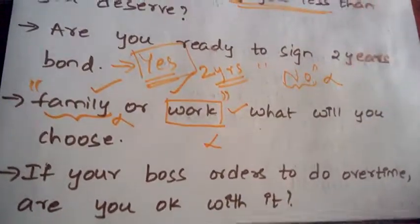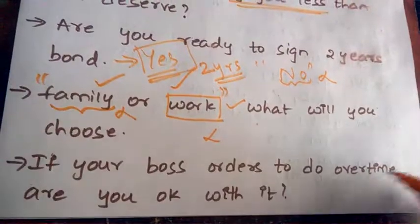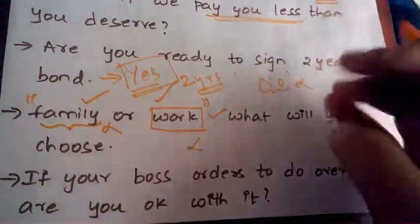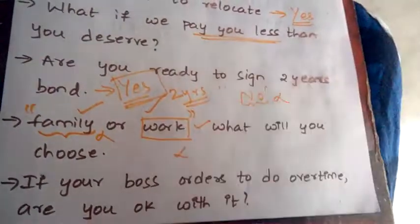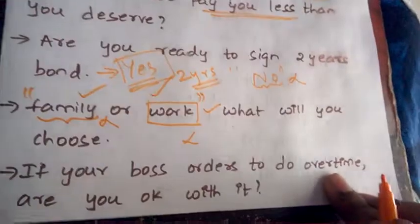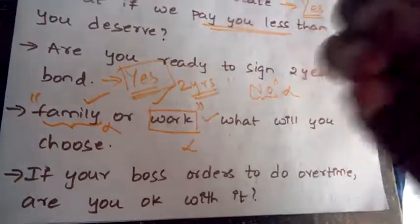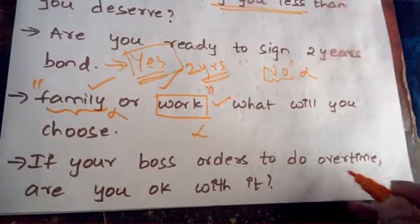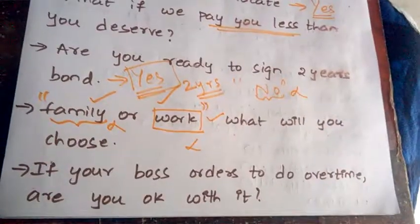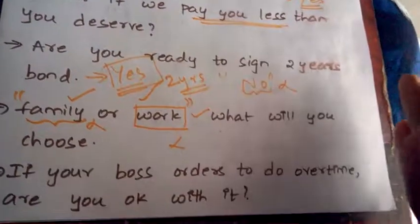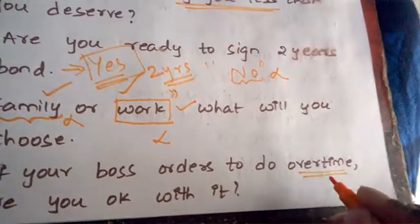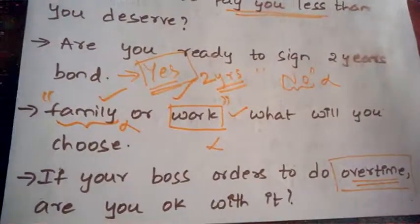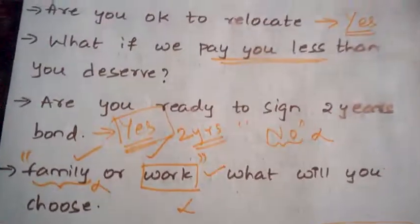The last common tricky question is: 'If your boss orders you to do overtime, are you okay with it?' Answer: 'Sometimes, if the reason is genuine and important, I'm ready for overtime. But if there's any chance of postponing the work or extending the deadline, I would prefer not to do overtime. However, if it's an important case where I must be there to complete the task, I am ready for overtime.' Give genuine and diplomatic answers.